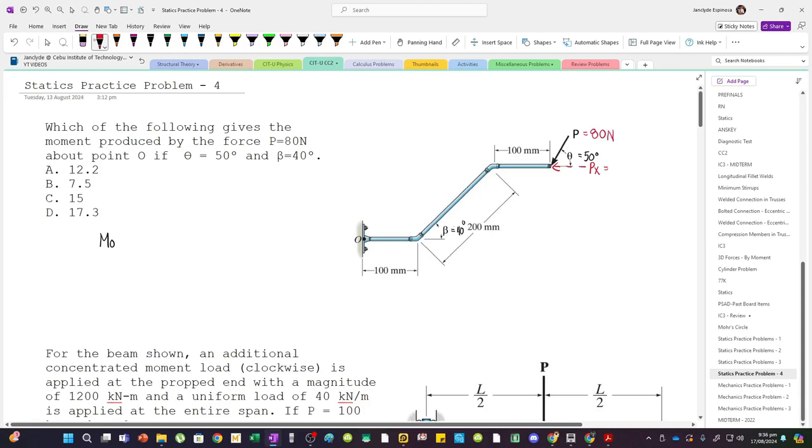So Px is 80 cosine 50. And then Py is 80 sine 50.